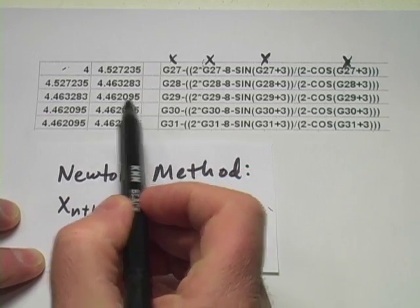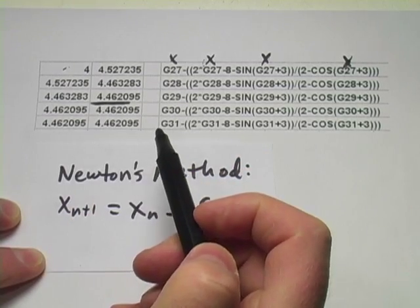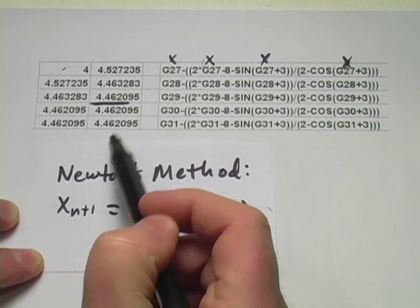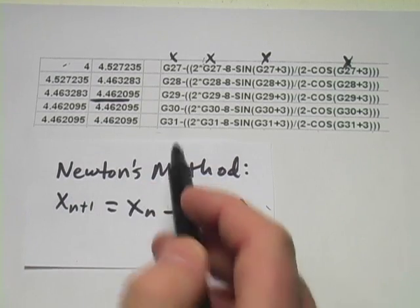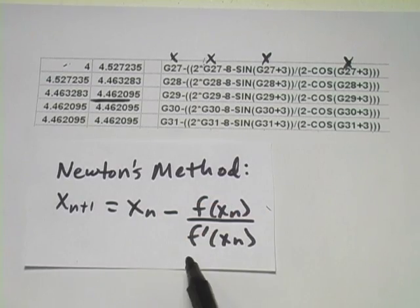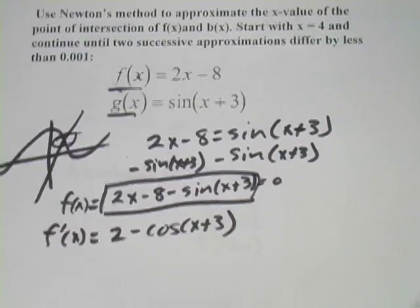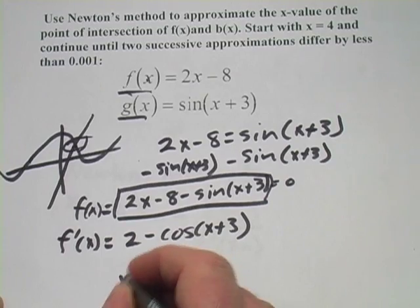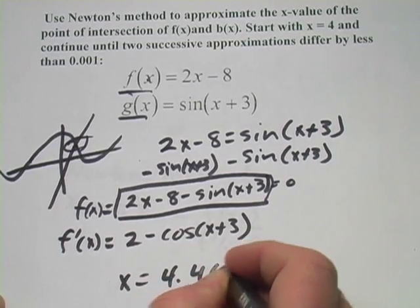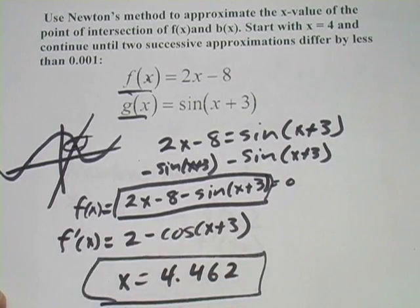It calculates the values automatically. And you can see, after just a few calculations, we get down to 4.462 and it stays there pretty much. There may be some changes in the digits way out here, but my spreadsheet isn't showing it. And it's accurate enough for us, so we get 4.462 for our answer.